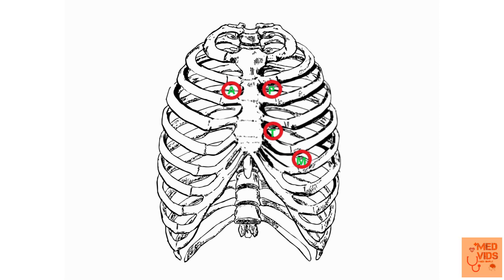The mitral area is the left fifth intercostal space at the mid-clavicular line. These are the auscultatory areas where you are supposed to listen. Even if a patient has a mitral valve lesion, you should auscultate all areas, because multiple valvular lesions can coexist — for example, mitral regurgitation along with aortic regurgitation — and auscultating all areas helps identify the exact pathology.